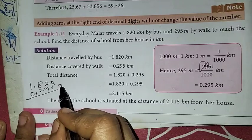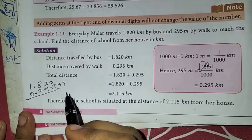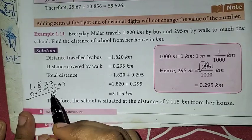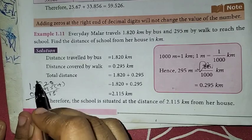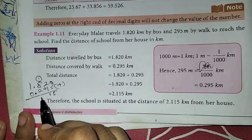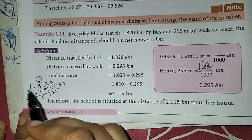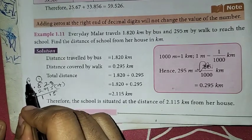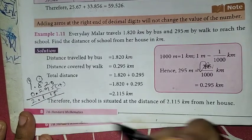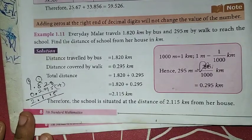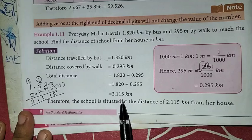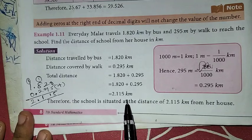Now we will add. 0 plus 5 is 5. 2 plus 9 is 11 — write 1, carry 1. 1 carry, 1 plus 8 plus 2 is... decimal — 1 plus 1 is 2. So the total is 2.115 km.